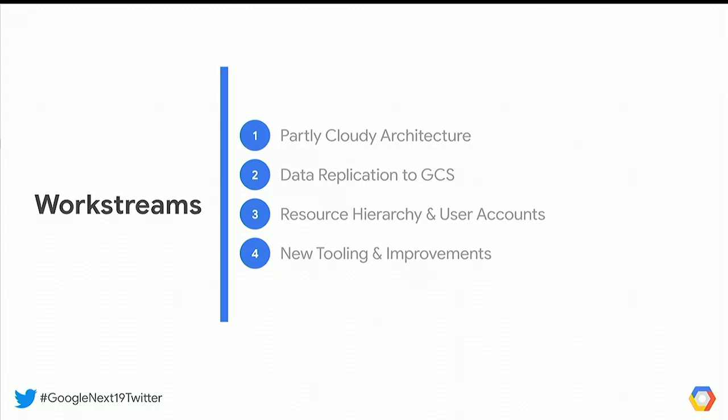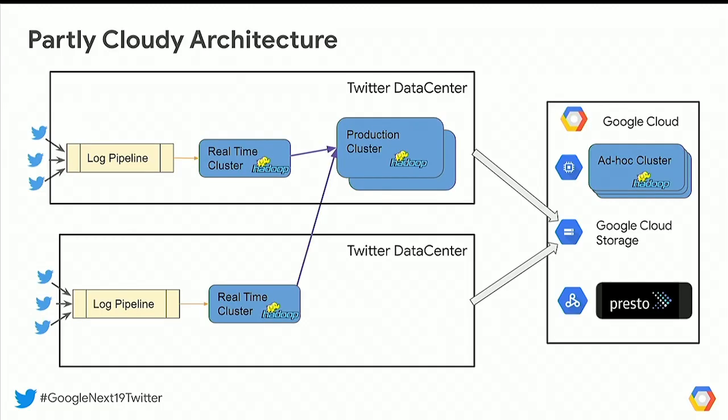Does extending your data architecture to the cloud mean you're keeping on-prem clusters and extending features to cloud, or fully migrating Hadoop clusters? We are migrating our ad hoc and cold data storage to GCP. We are still keeping our production clusters on-premises. Some clusters will continue to remain on-premises, and we will have new clusters — like ad hoc clusters — coming up in GCP. During the transition, both will be live until migration is fully complete, at which point we'll have ad hoc clusters only in cloud.